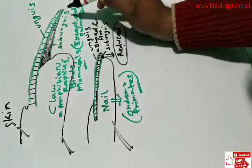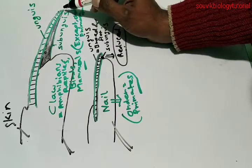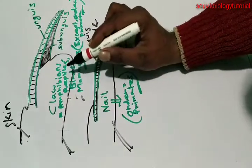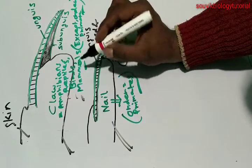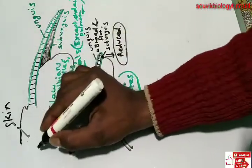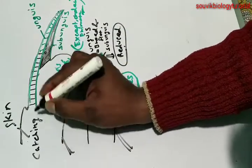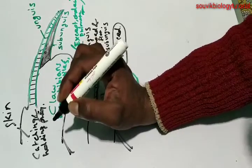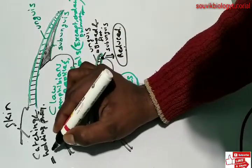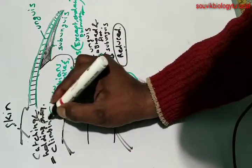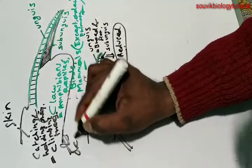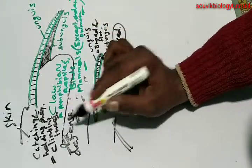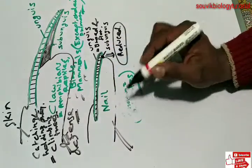The claw has a pointed unguise, and almost all mammals, birds, and reptiles have claws. The functions of the claw are mainly catching and holding prey, climbing trees, and defense.